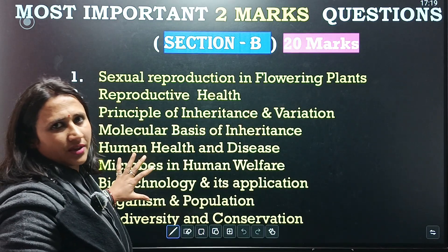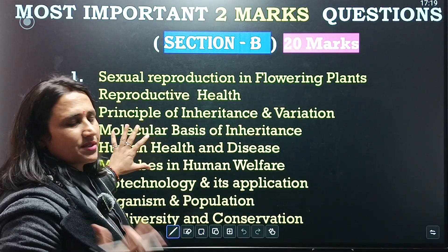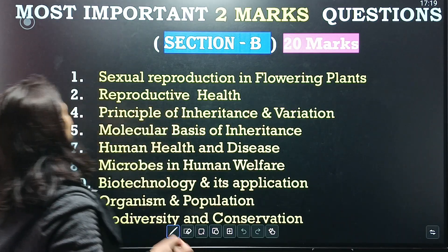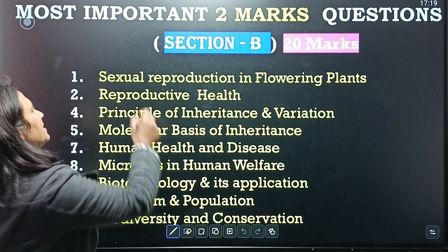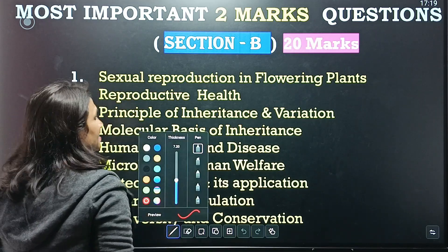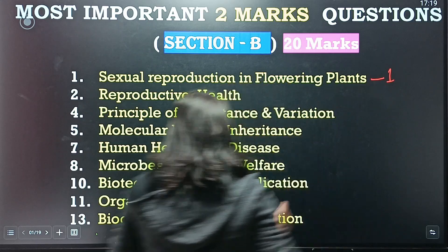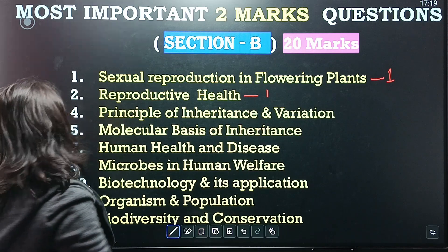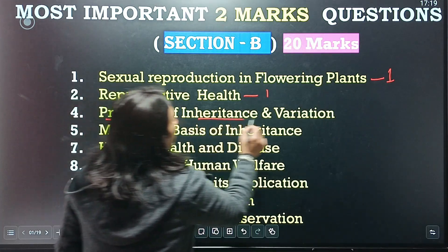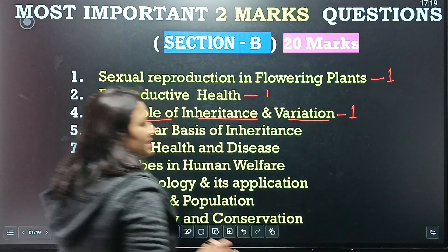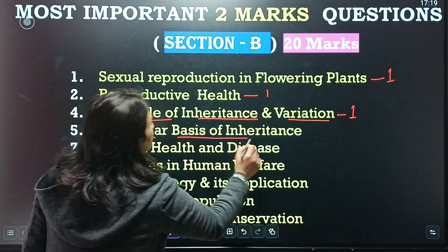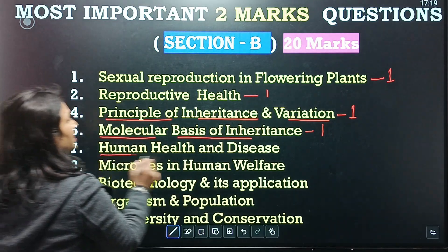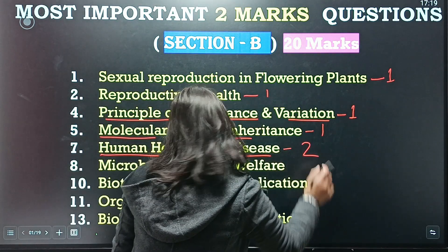Chapter-wise, the first chapter is Sexual Reproduction in Flowering Plants — one question. Next is Reproductive Health — one question. The fourth chapter is Principles of Inheritance and Variation — one question. Then Molecular Basis of Inheritance — one question. Then Human Health and Diseases — two questions from this chapter.